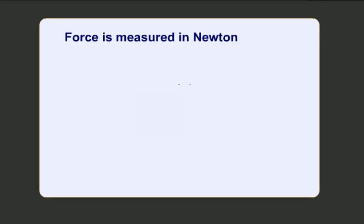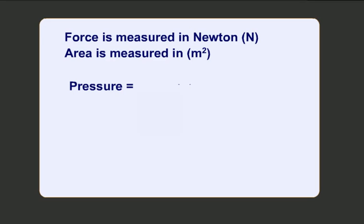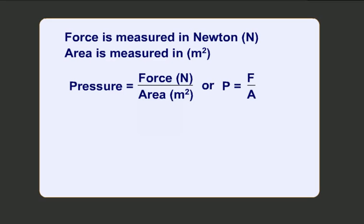Force is measured in Newton, denoted by the capital N of the English alphabet, and area is measured in meter square. Hence, pressure is equal to force divided by area, or P is equal to F by A, where P denotes pressure, F denotes force, and A denotes area.